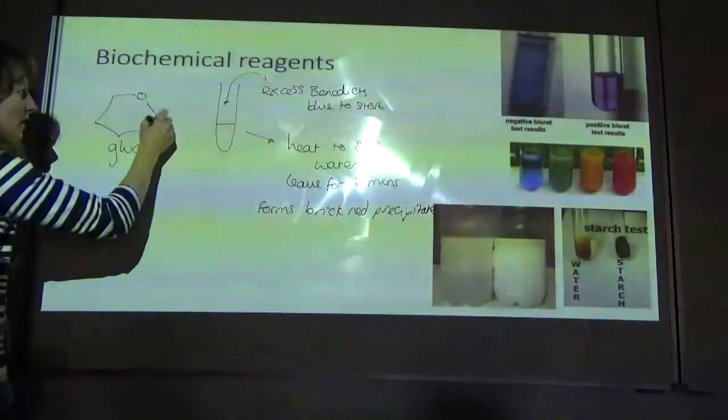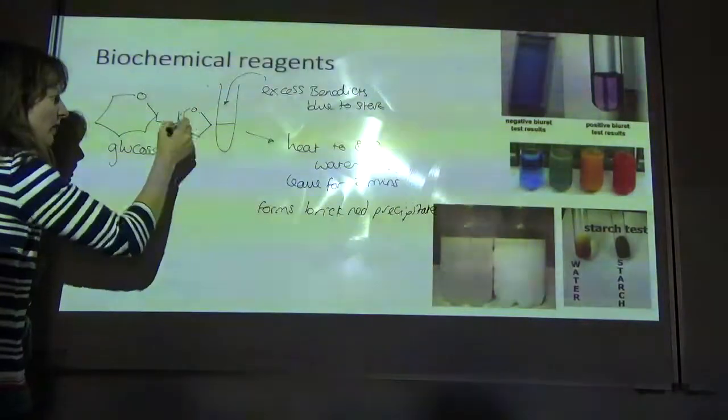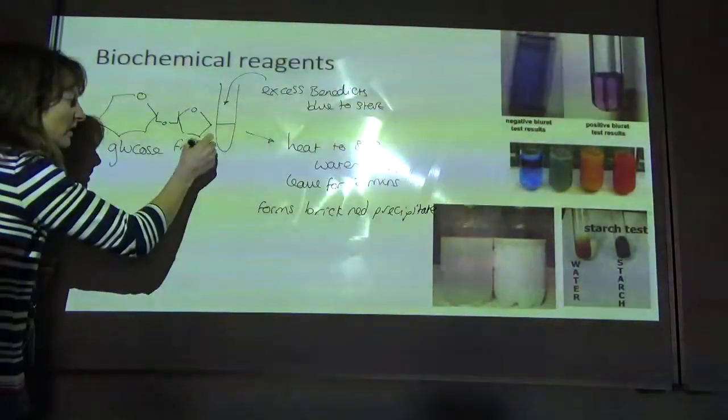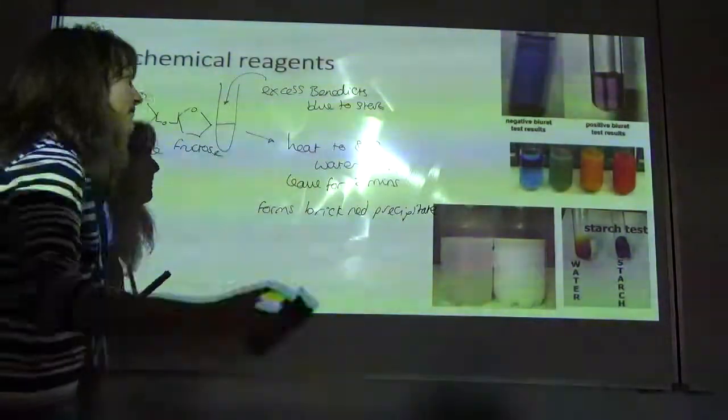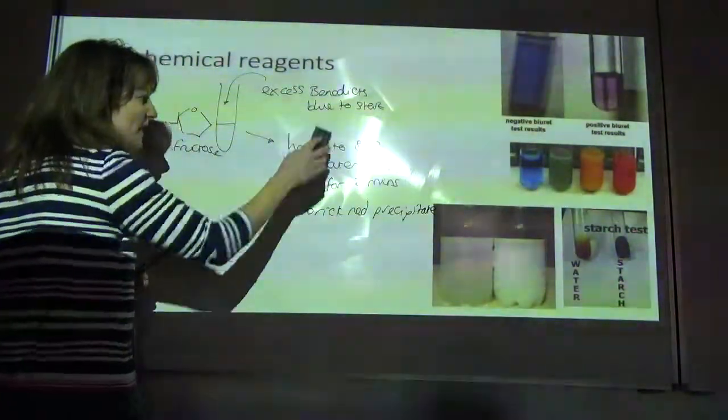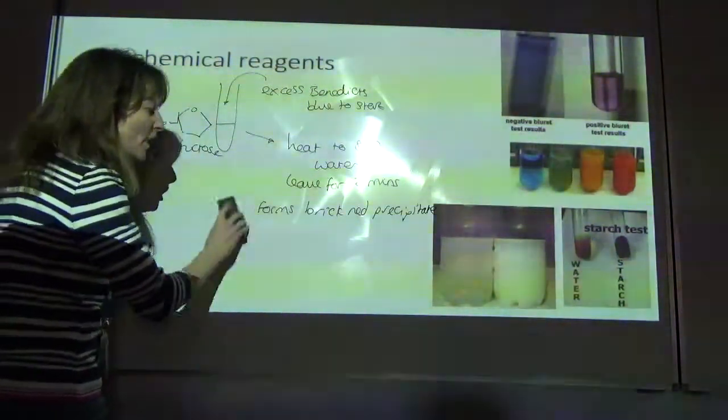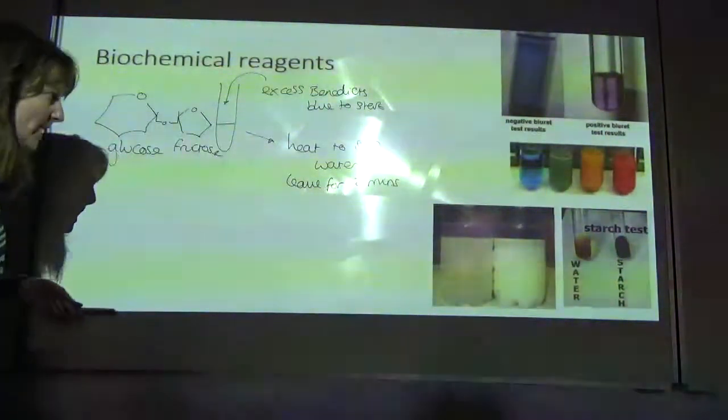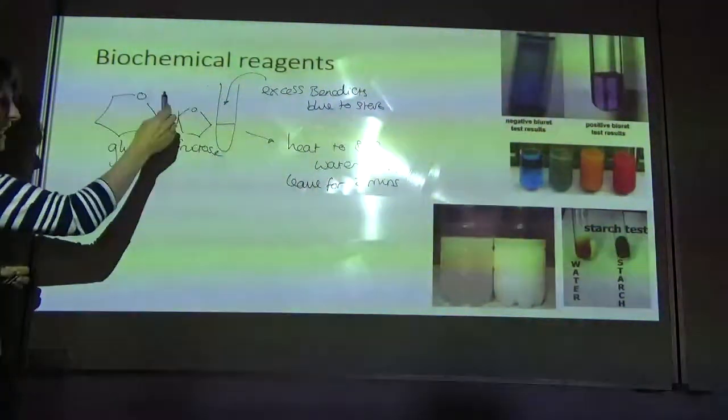For a non-reducing sugar, so for example sucrose, which is basically fructose and glucose stuck together. Again, you start this time by adding your excess Benedict's. You heat it to 80 degrees in a water bath. You leave it for two minutes, but it doesn't form a precipitate.